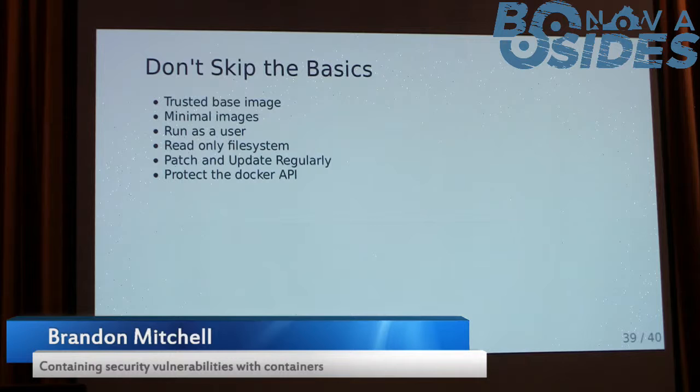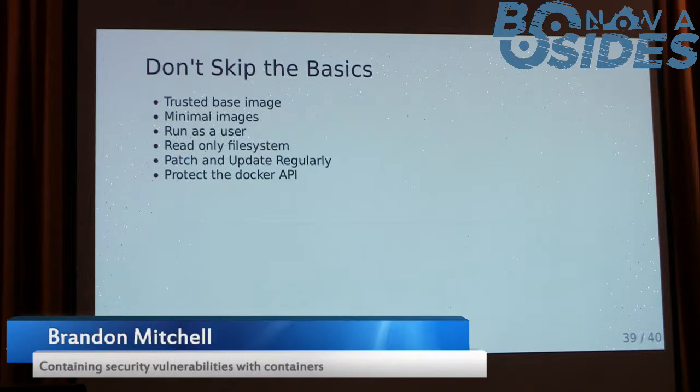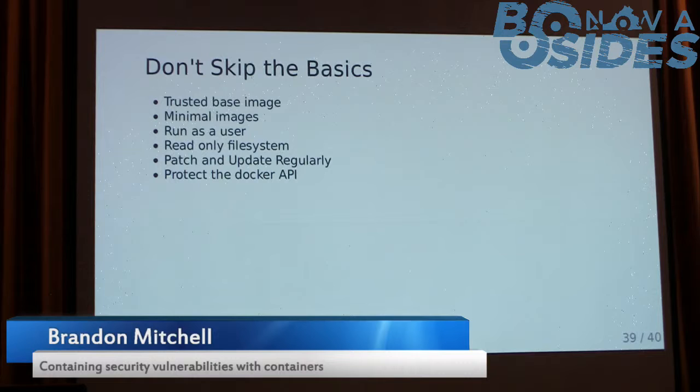And please patch. Containers make this incredibly easy, so just do it. Download newer images. I go into clients, set them up on day one with scripts to download newer images from Docker Hub so they get updates — then I come back a year later and they've turned it all off and they're still running the image I left because they didn't want to change anything. Please, just patch. And lastly, protect that API. Don't let anybody in the world touch it. Lock it down so that it's just the CICD system running, and not every user in the world talking to it.